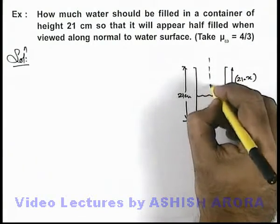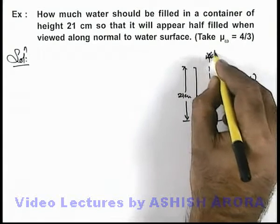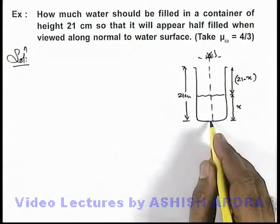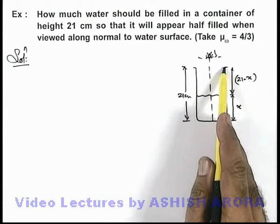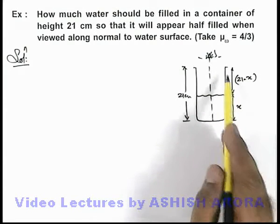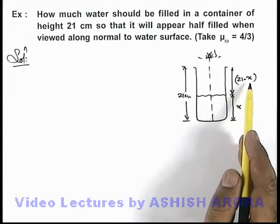Now if it is viewed normally, then we can see the apparent depth of the bottom of container will appear to be at a distance x by μ. And the remaining distance up to which water is not filled is 21 minus x.